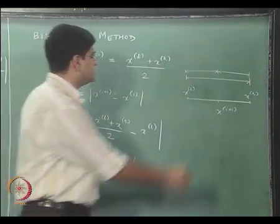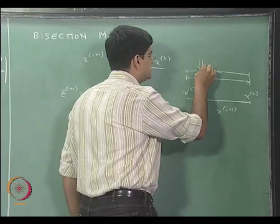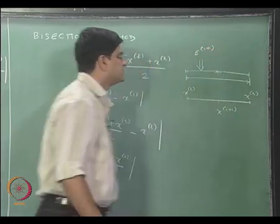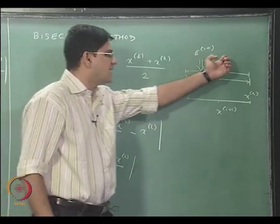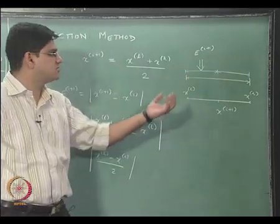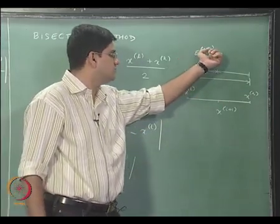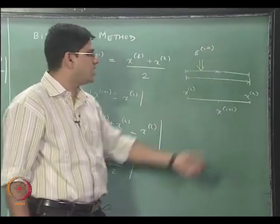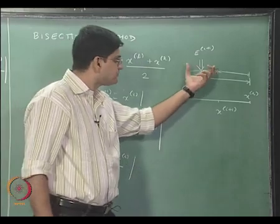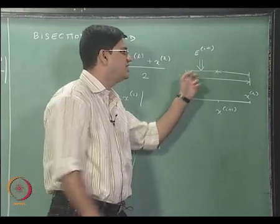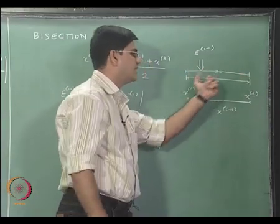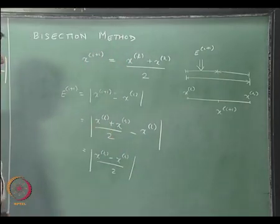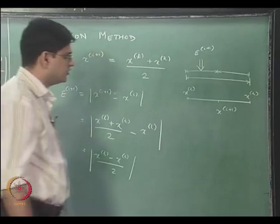So x_r minus x_l is nothing but the particular length of the current interval, and x_r minus x_l divided by 2 is essentially half that length. This is nothing but our e_(i+1). To summarize, at any given iteration count i, the next error e_(i+1) is just half the length of the current segment from x_l to x_r.